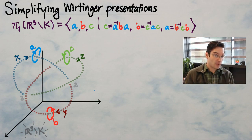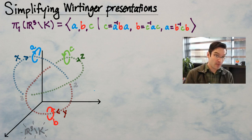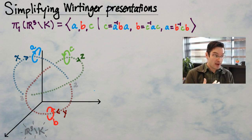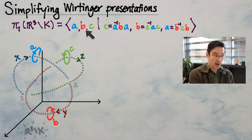In our previous video, we saw how to discover a presentation known as the Wirtinger presentation for the knot group associated with an oriented knot. This is the fundamental group of the complement of that knot inside three-dimensional space. The way we got that was by assigning to every oriented arc in a knot diagram a generator for the knot group.